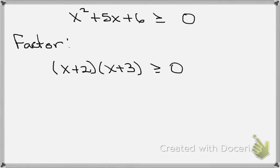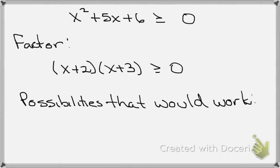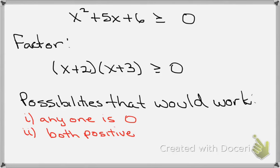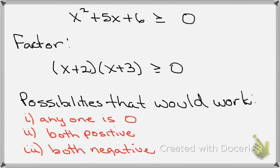Consider the possibilities. If any one of those factors was 0, we would satisfy the inequality — for example, if x equals minus 2 or x equals minus 3. Also, if we choose x values so that both factors x plus 2 and x plus 3 are greater than 0, that works because multiplying two positive entities gives a positive product. A third possibility is if both x plus 2 and x plus 3 are negative, because multiplying two negatives together also gives a positive result.